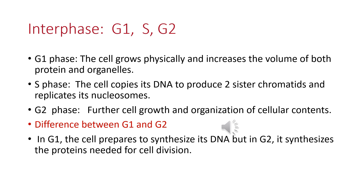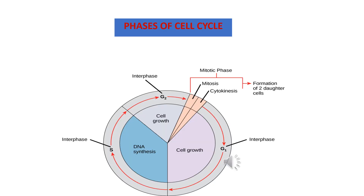This is the Interphase stage composed of G1, S, and G2. In this diagram you can see the different phases of the cell cycle. G1 and G2 are for cell growth; the mitotic phase and cytokinesis result in the formation of two daughter cells, which again continue the same cycle.